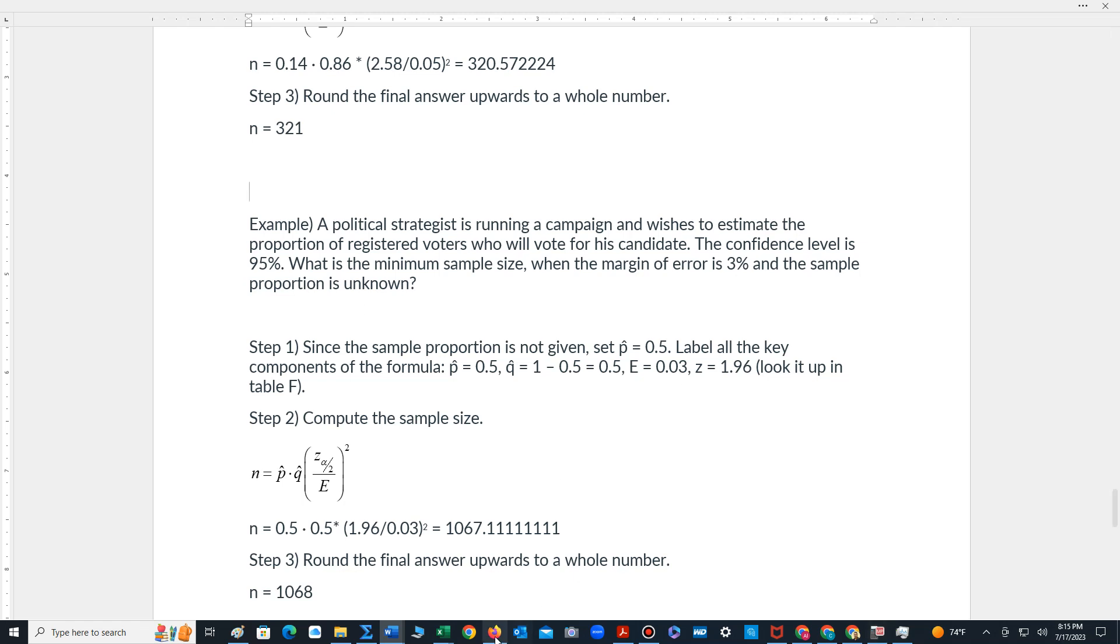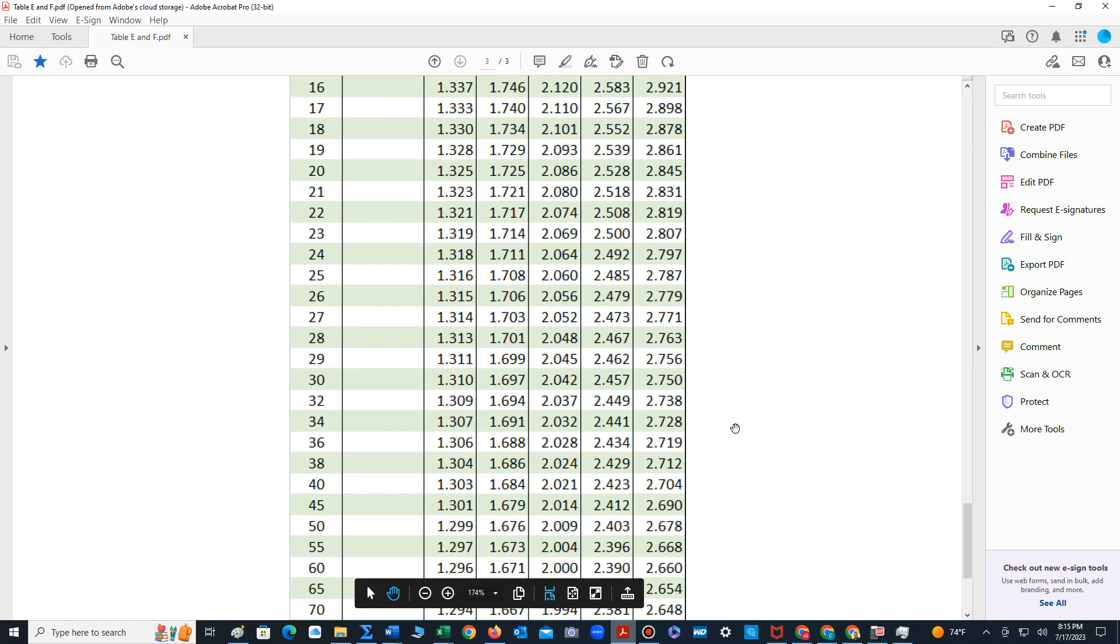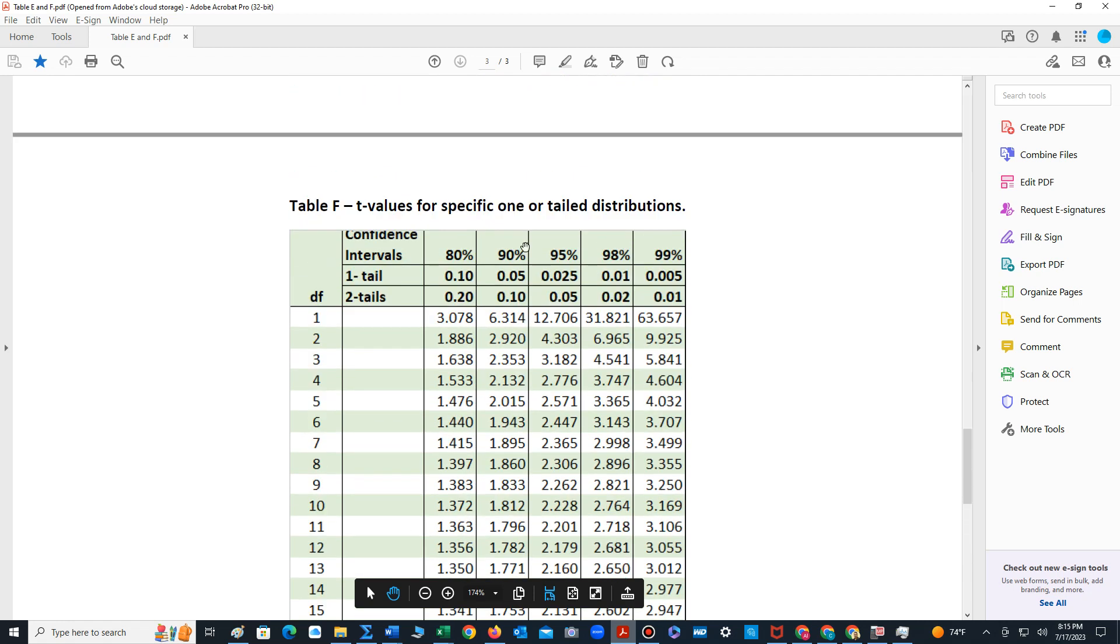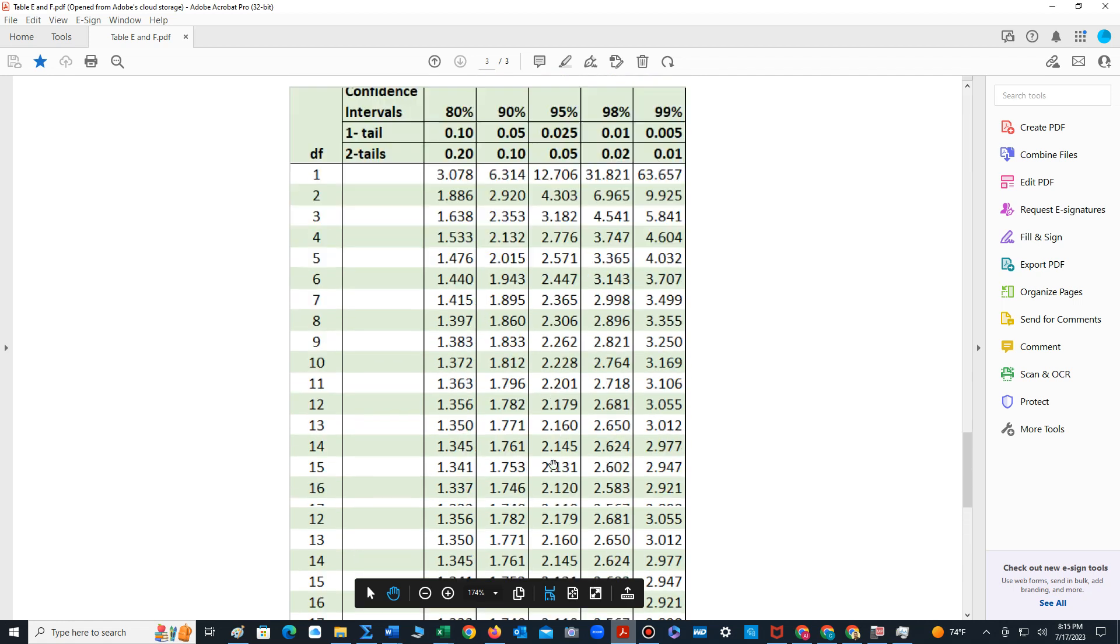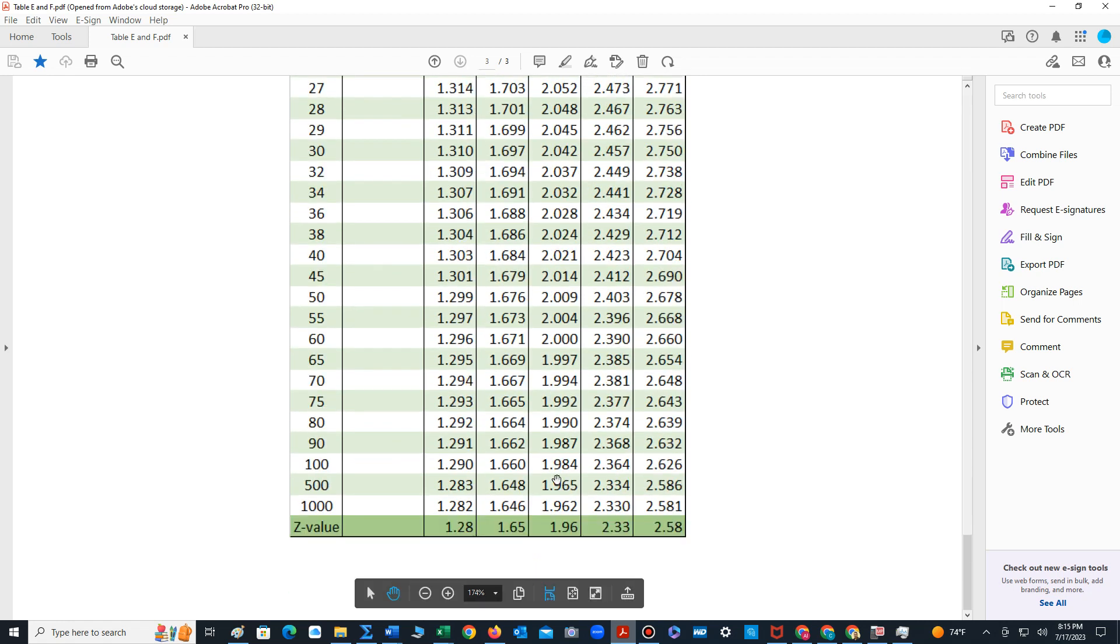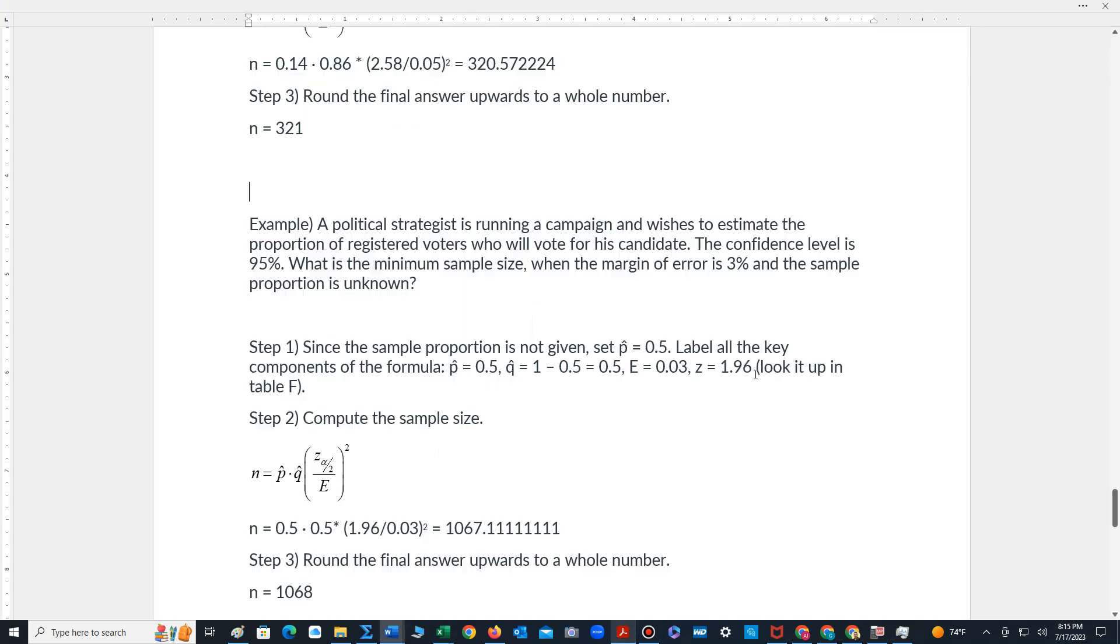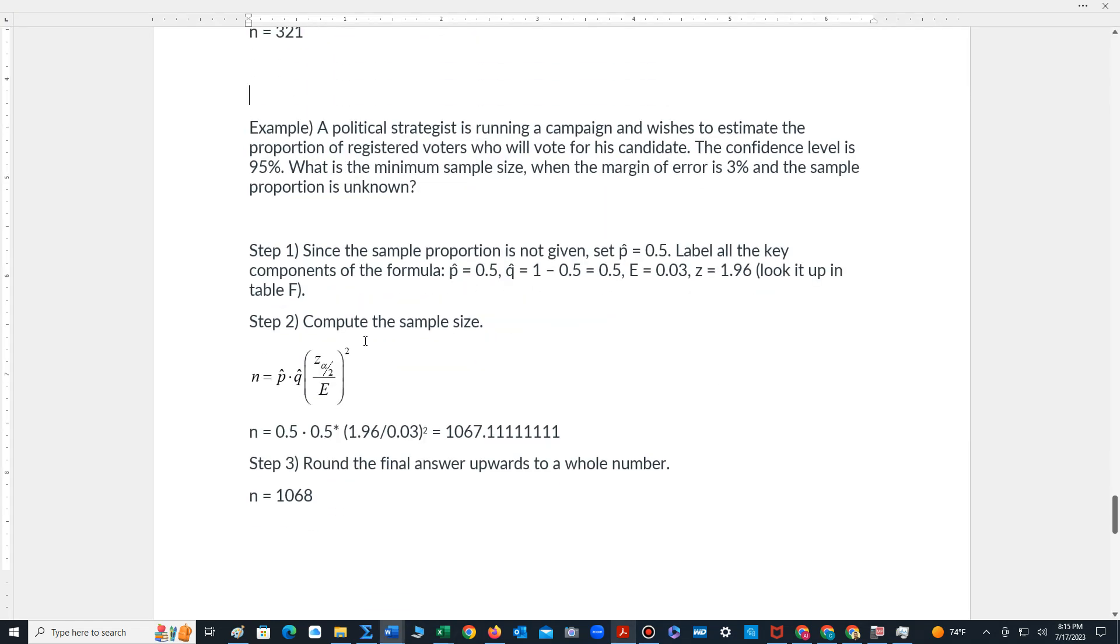Using 95 percent we can turn to table F. 95 percent, go all the way down to locate the Z value of 1.96. Plug that information into the formula. We have 0.5 times 0.5 times 1.96 divided by 0.03 squared. We'll type that in the calculator.